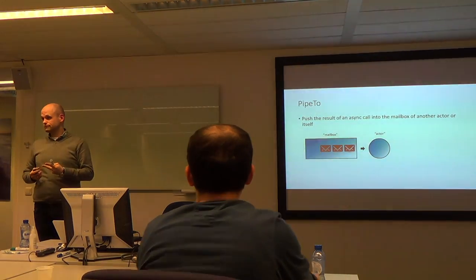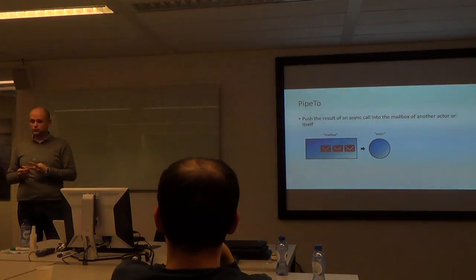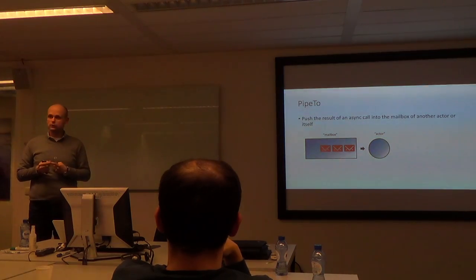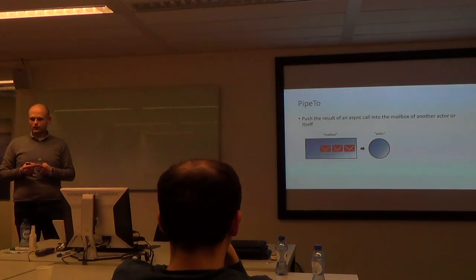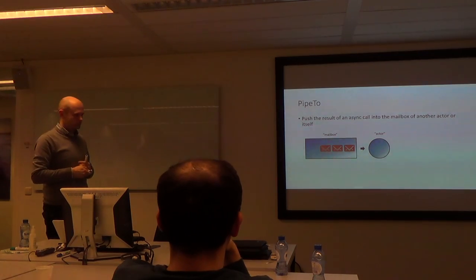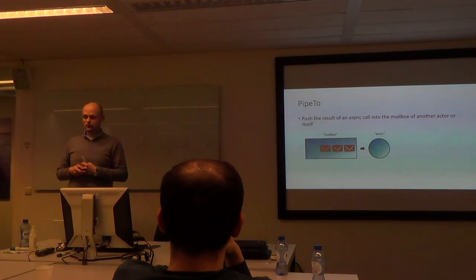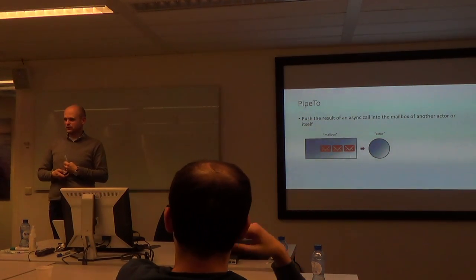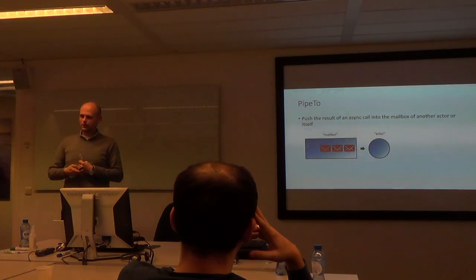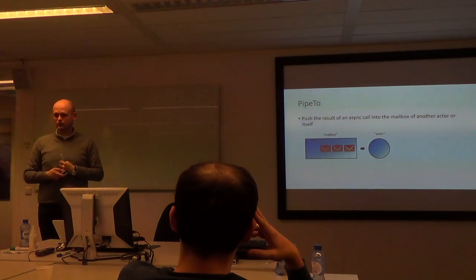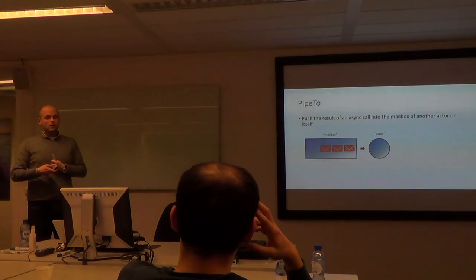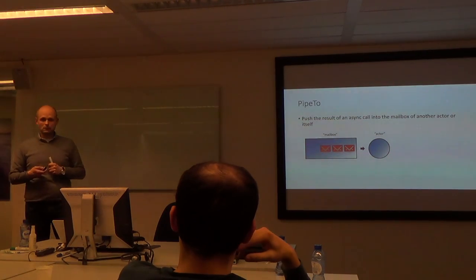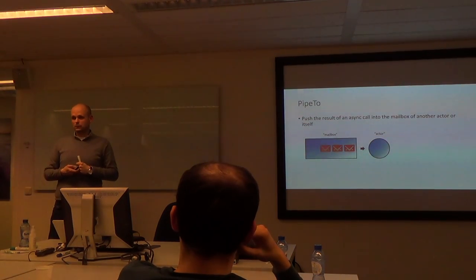There are two golden rules when using an actor. One: always use immutable messages. Two: never block an actor. In our proof of concept using Akka.NET, we performed an async operation and awaited it. When you await an async operation, you block an actor — that's something you should not do. We could only do about 13 messages per second. When we resolved that using the pipe pattern, we could do about 5,000 messages per second.